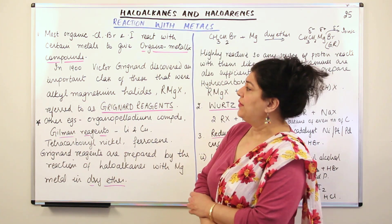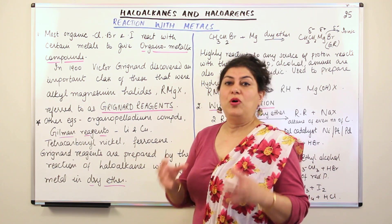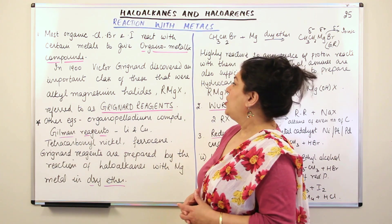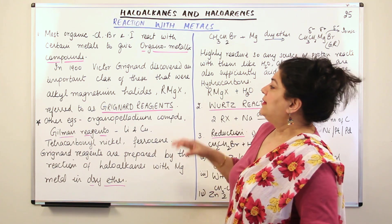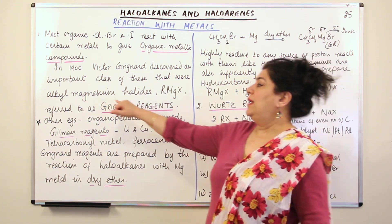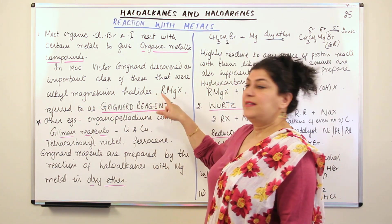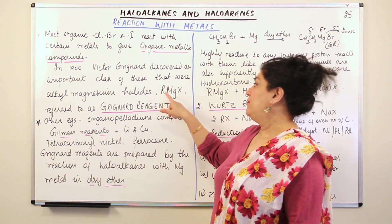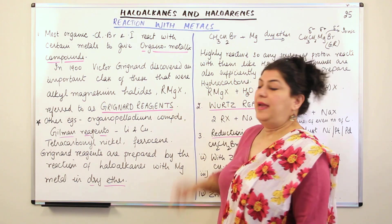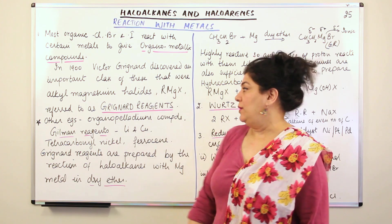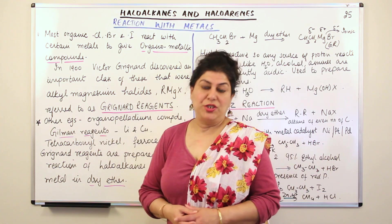Victor Grignard discovered these important organometallic compounds — alkyl magnesium halides represented by the general formula R for the alkyl group, Mg for magnesium, and X for the halogen. They are referred to as the Grignard reagents.